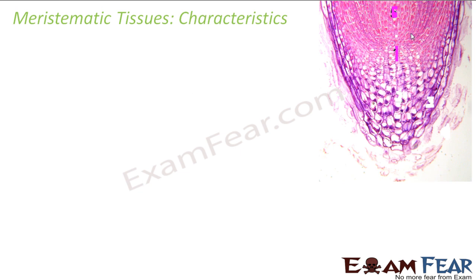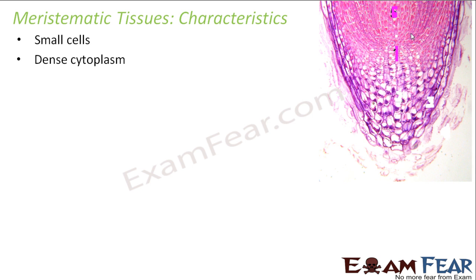Now let us look at the characteristics of meristematic tissues. Meristematic tissues are generally made up of small cells with dense cytoplasm. They have thin cell walls. Just think about why: if they have a very thick cell wall, it will be difficult to break it and divide, but a thin cell wall makes it easy to divide. Similarly, small cells can divide more easily than large ones.